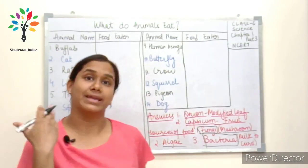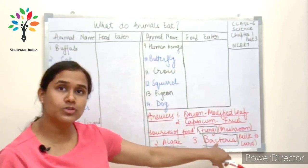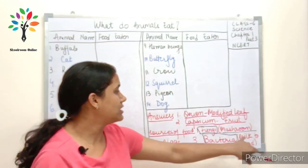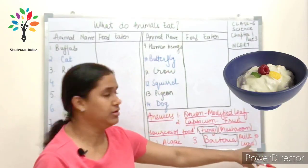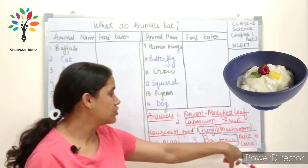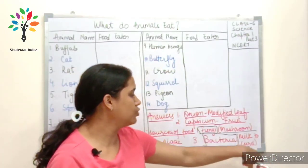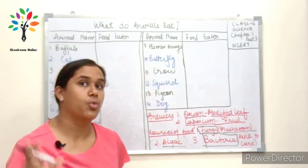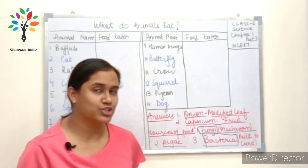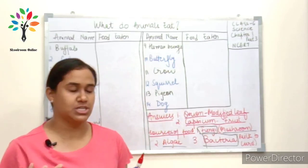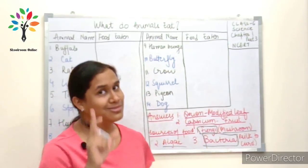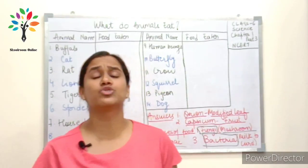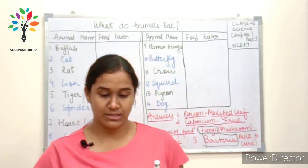The third source is bacteria. Bacteria is not directly eaten, but we use bacteria in our food items. For example, we use bacteria to make curd out of milk — it is bacteria which converts milk to curd. If you can think of other examples where bacteria is used in the food-making process, leave your answers in the comment section.